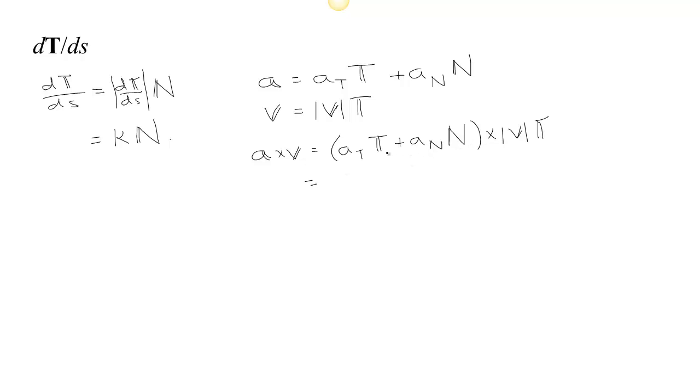This cross product is distributive, so we get aT cross length v, T, plus a sub n times N cross speed T.